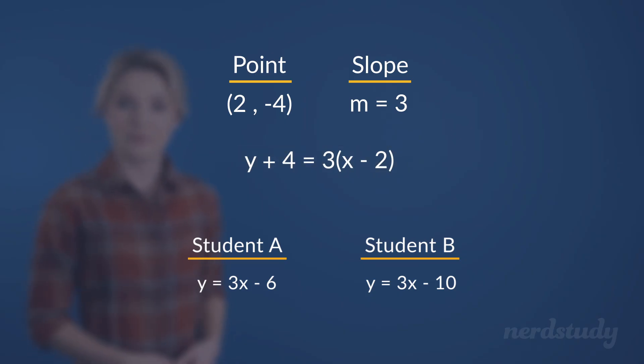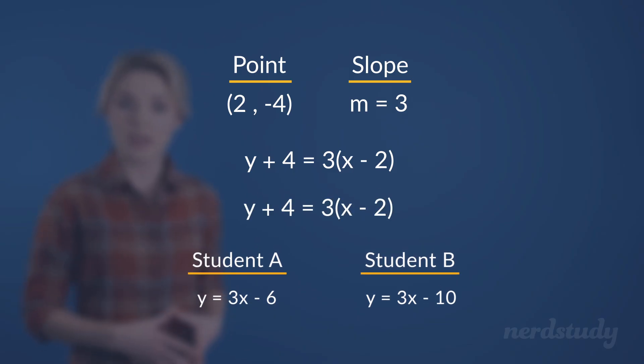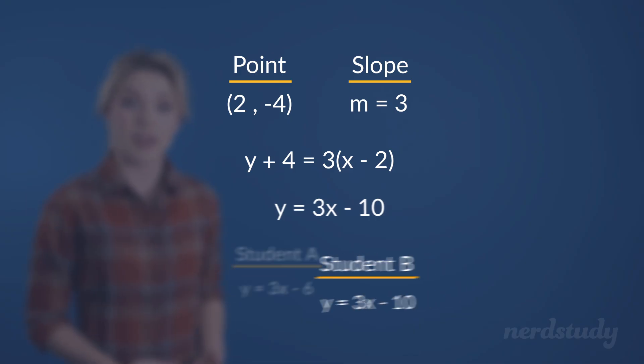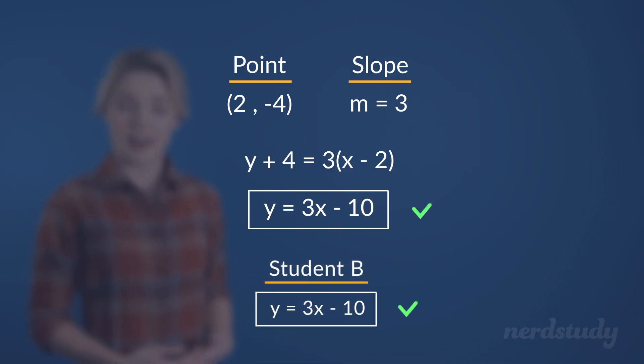Well, let's figure this out. The first thing to do here is to distribute this 3 on the right side. What we get is this. At this point, the answer becomes easy. We subtract 4 on both sides, and it becomes obvious then that student B has the right answer.